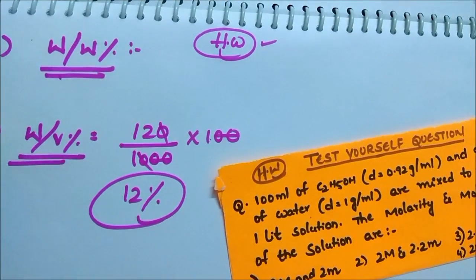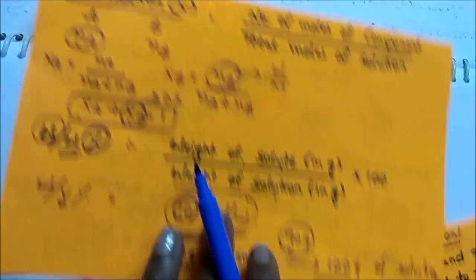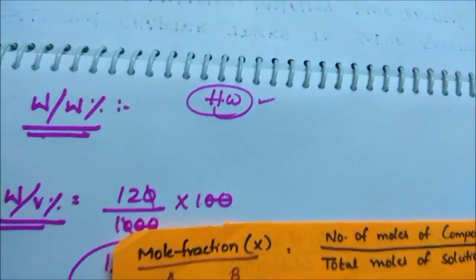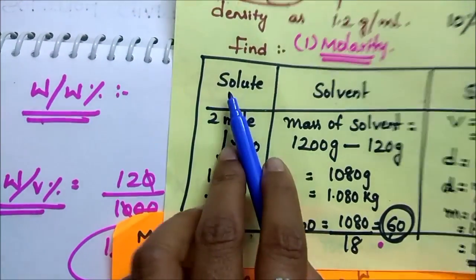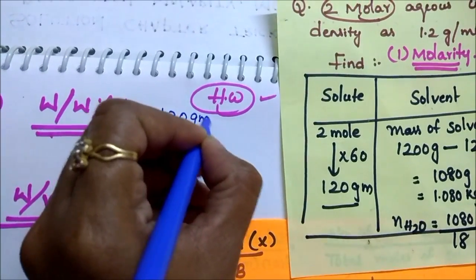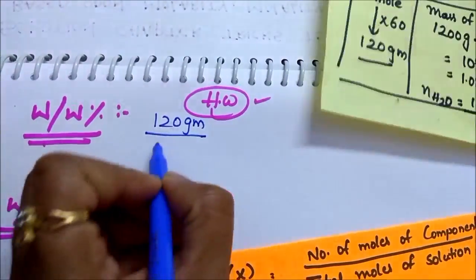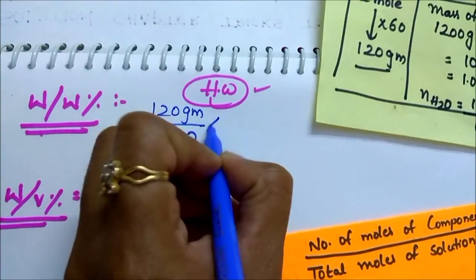What is the weight of solute we got in the previous problem? We got 120 gram. Weight of solution is how much we got? 1200 gram into 100.